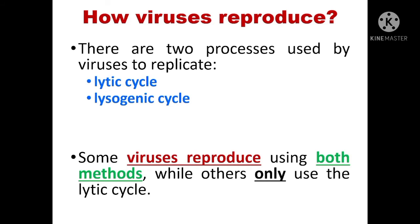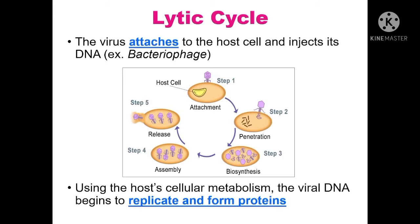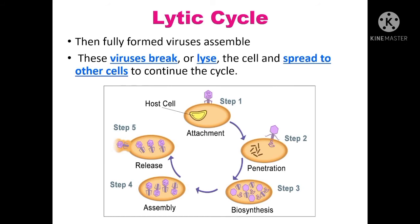There are two processes used by viruses to replicate: the lytic cycle and the lysogenic cycle. Some viruses reproduce using both methods, while others only use the lytic cycle. In the lytic cycle, the virus attaches to the host cell and injects its DNA — one common example is the bacteriophage. Using the host's cellular metabolism, the viral DNA begins to replicate and form proteins. The fully formed viruses then assemble, break or lyse the cell, and spread to other cells to continue the cycle.